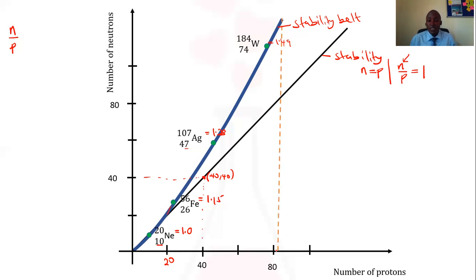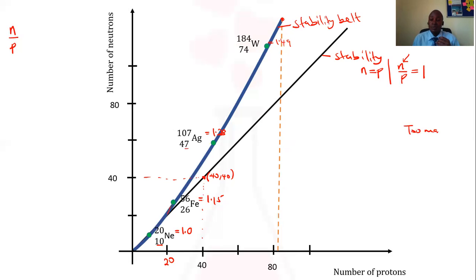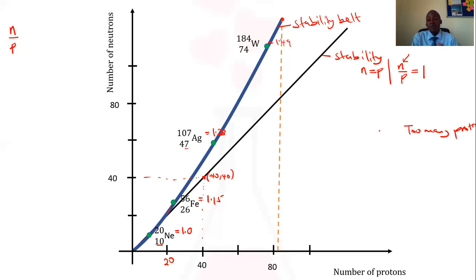When we reach atomic number 83, we realize this is the last number of protons where we can have stable atoms. Any atom whose atomic number is above 83 will tend to be unstable because it will have too many protons. Too many protons means a very strong repulsion between the positively charged protons that cannot even be balanced out by the presence of neutrons. So we shall not have any stable element above atomic number 83.